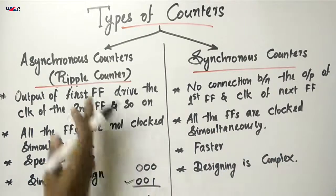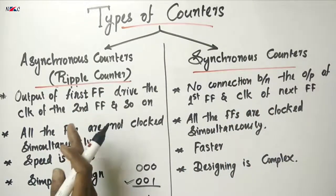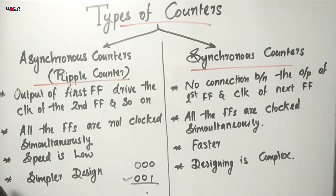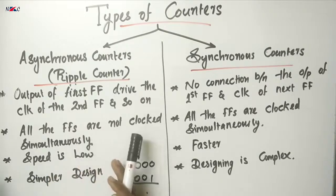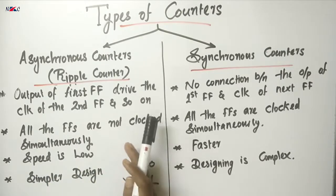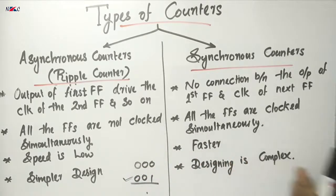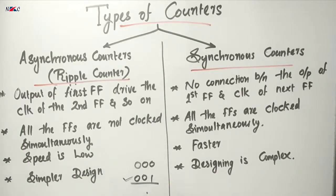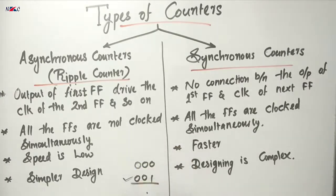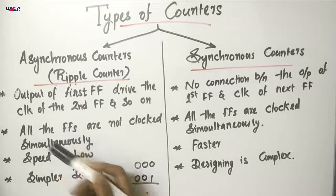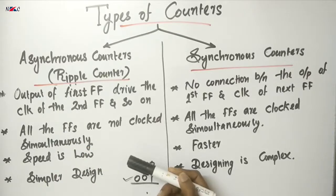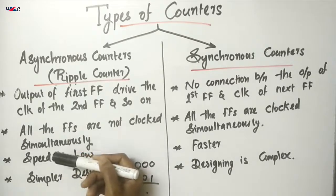To summarize the differences: in an asynchronous counter, the external clock pulse is applied only to the first flip-flop, and the output of the first flip-flop acts as the clock input of the second flip-flop, and so on. Whether Q or Q-bar is connected to the clock input depends on the counting sequence. For ascending order, we connect the Q output to the clock input. For descending order, we connect the Q-bar output to the clock input.